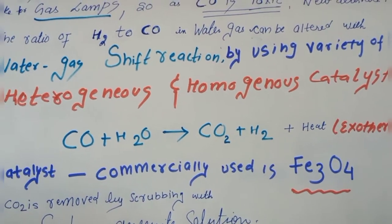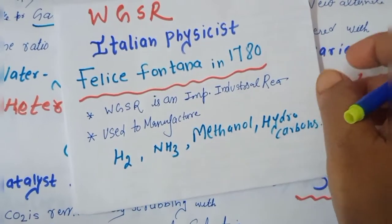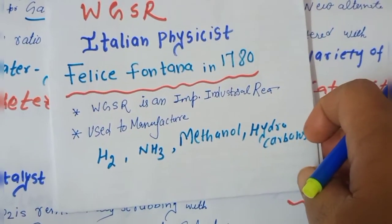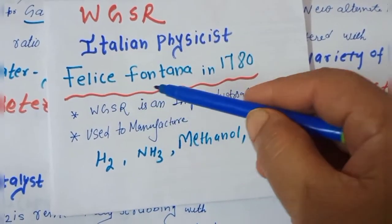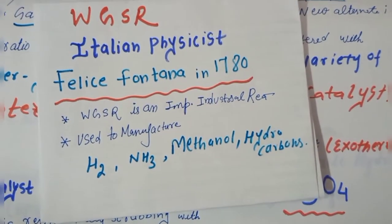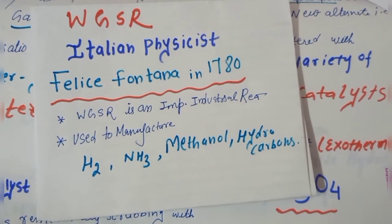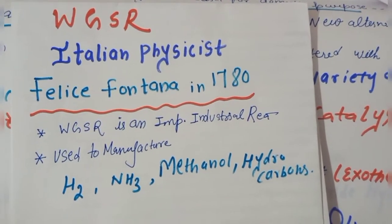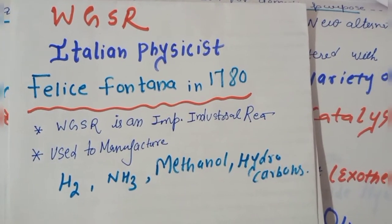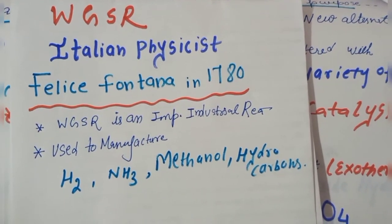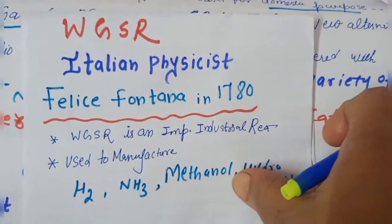This water gas shift reaction was discovered by the Italian physicist Felice Fontana in 1780, and this is a very important industrial reaction because this is used for the manufacture of hydrogen, ammonia, methanol, and other hydrocarbons of industrial importance.